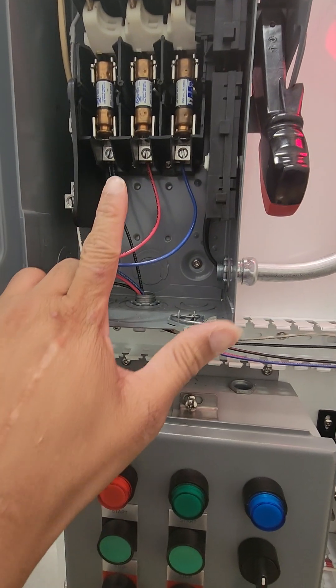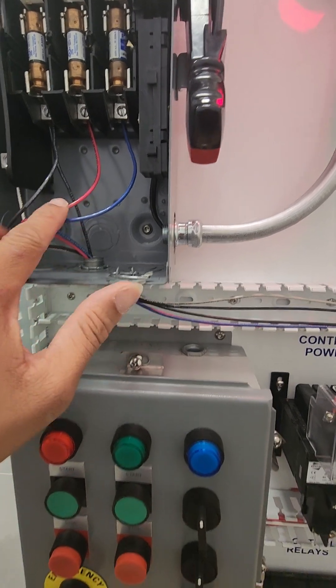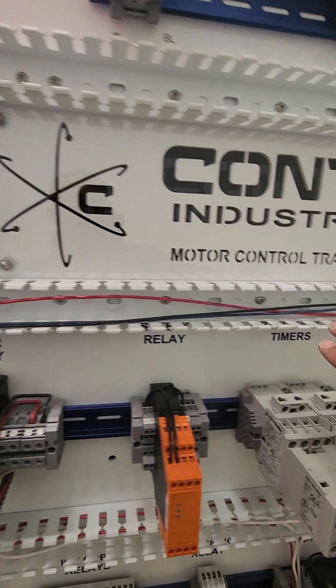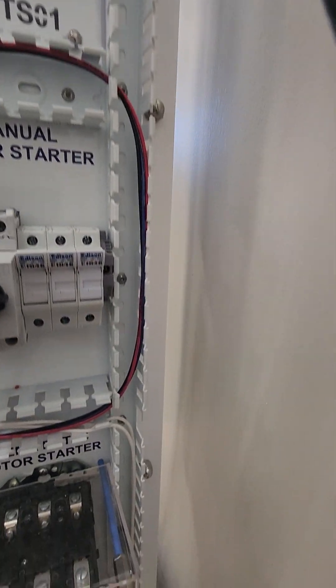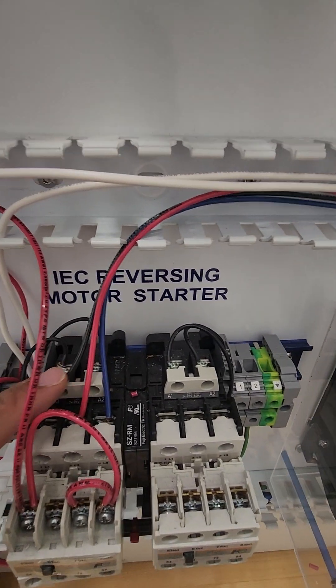As you see I have my black, my red, and my blue. These are all my power wires. They are going all the way across, nice and neat, all the way down, and they are going right here.